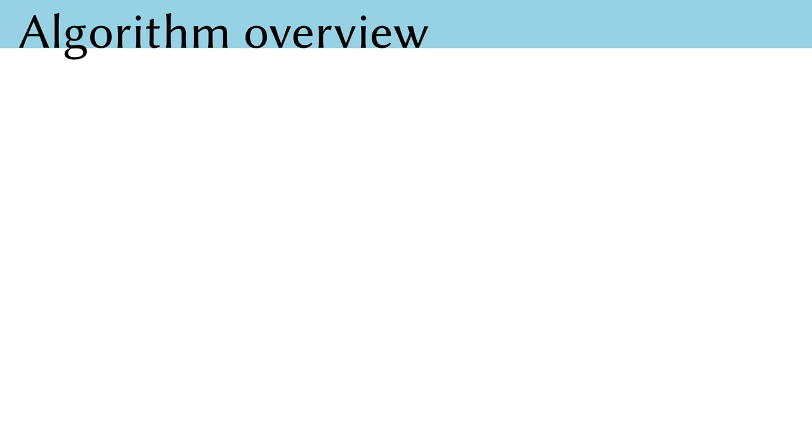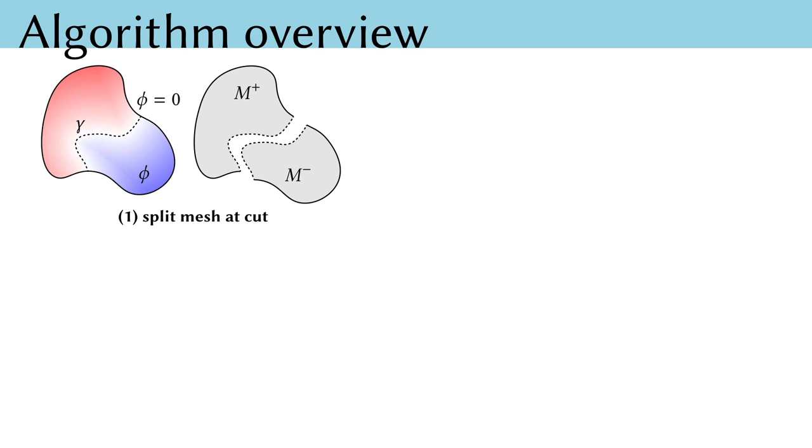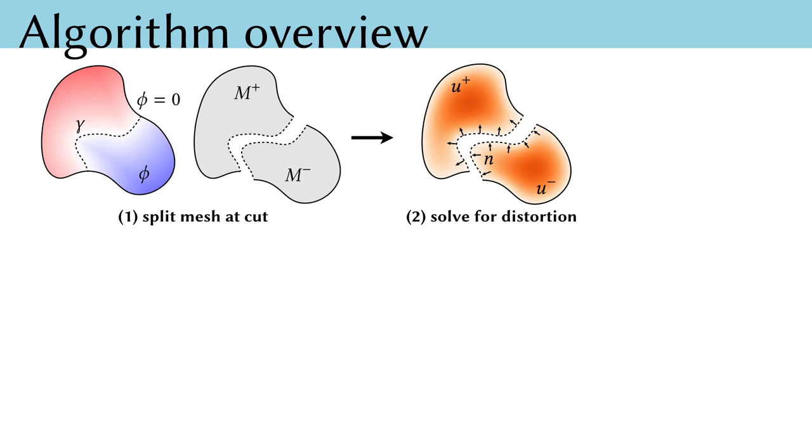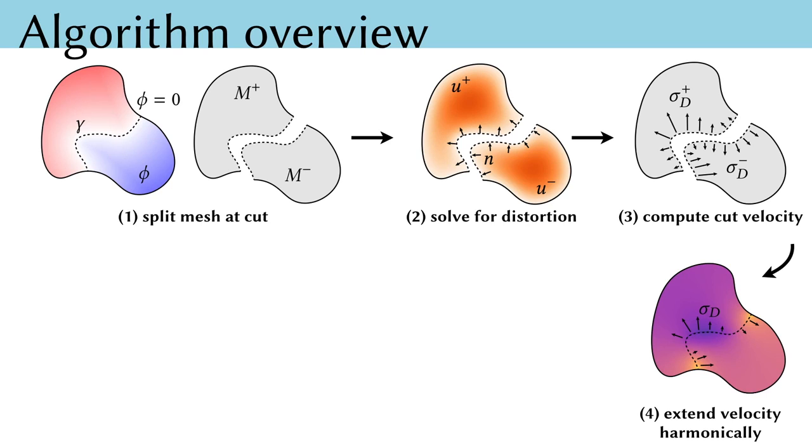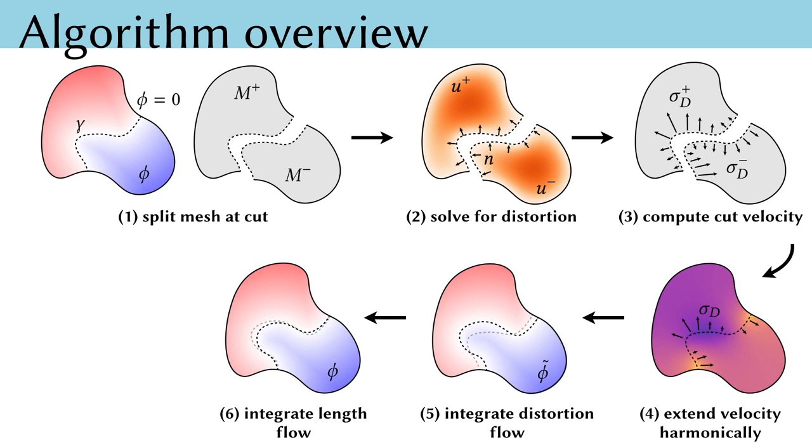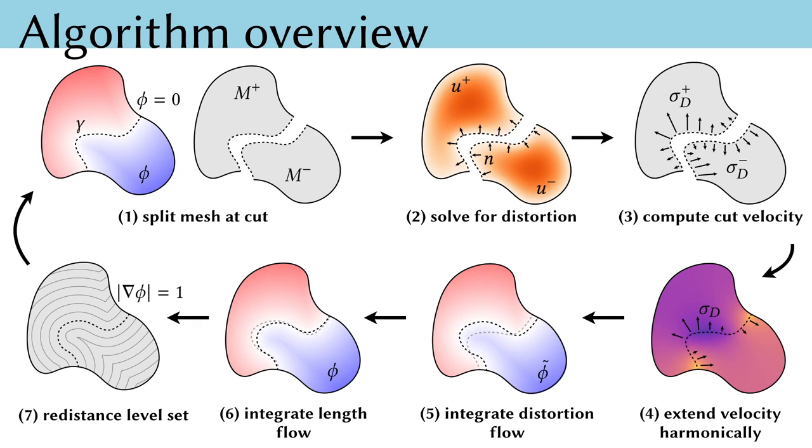Now we can walk through the steps to evaluate our flow and iteratively optimize the cut. Given a signed distance function phi, we extract the cut curve and split the mesh along the cut. We then solve for distortion in all of the induced patches and compute the flow velocity along the cut. We then harmonically extend this velocity across the surface, which is necessary because we're working with this implicit representation, and we then integrate the distortion term of the flow with a forward Euler step and the length term of the flow with a backward Euler step. Finally, we redistance the implicit function such that it remains a signed distance function.